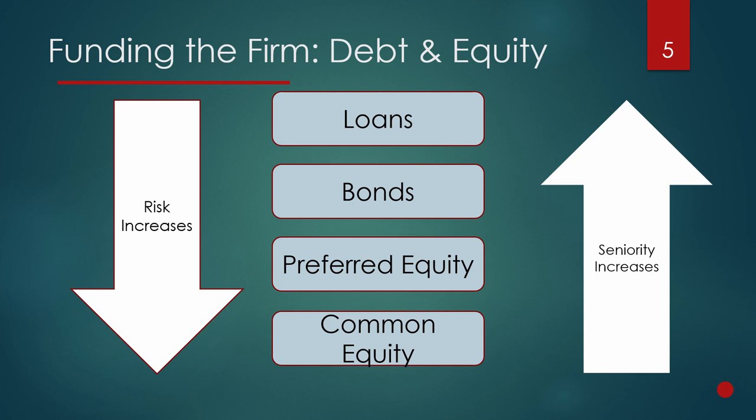Preferred equity holders have a guaranteed dividend level and therefore hold less risk than common equity holders. On the other hand, if the business does fail, it must first pay off its loan obligations and then its bonds. This concept is known as seniority of obligations — effectively, which security holders have the first legal right to assets.